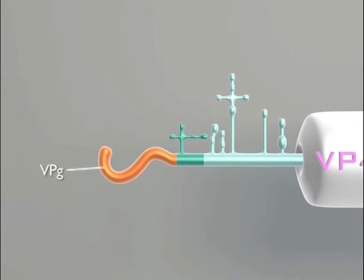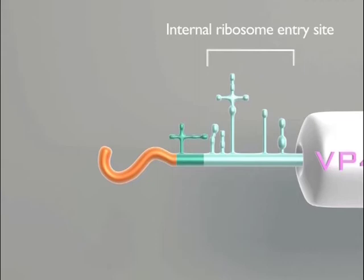After the VPG, we find an untranslated region. The 5-prime end untranslated region of poliovirus contains an important sequence called the internal ribosome entry site, or IRES for short. Its purpose is to promote internal binding of the ribosomal subunit.